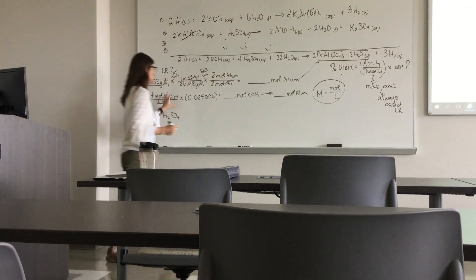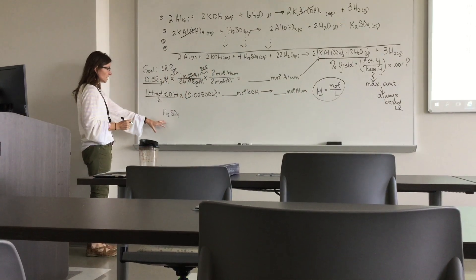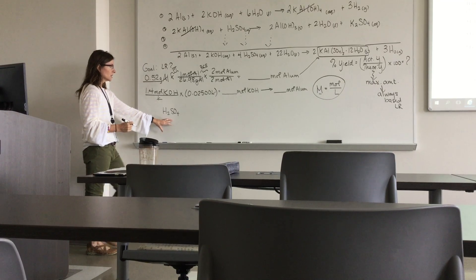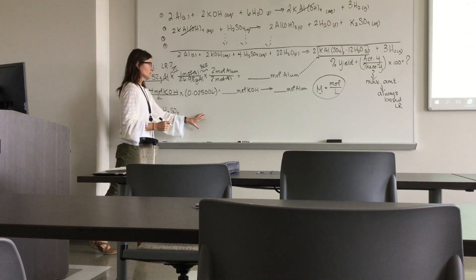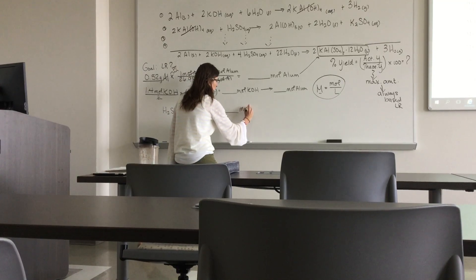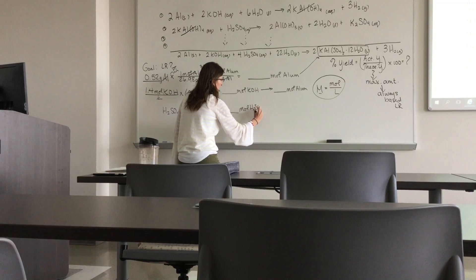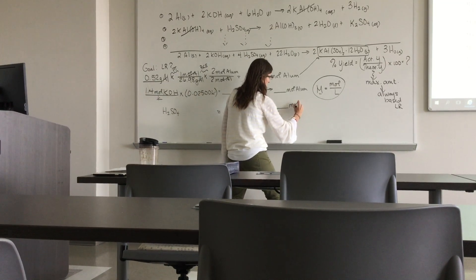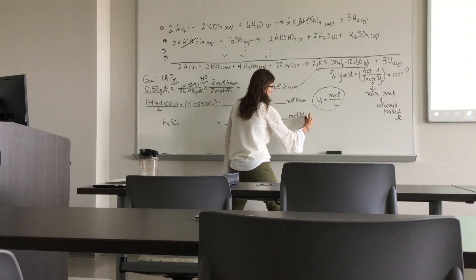The sulfuric acid is the same way. You started, I believe, with 9 molar. You had roughly 10 mils. You've got to convert that. But bottom line, you need to also get that to moles of sulfuric acid. And again, you're not done. You've got to go all the way to moles of alum.